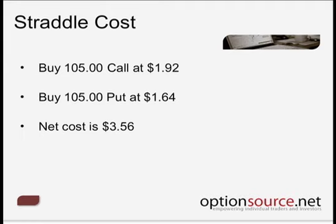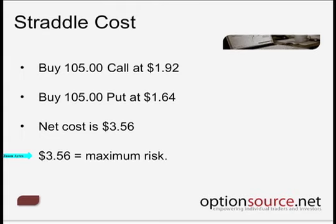This $3.56 represents the maximum risk of that particular strategy. John just had a question — it's a little more advanced for some folks — but why would you want to sacrifice the gamma by splitting your expirations? That would be referencing the impact that a stock movement is going to have on the delta and the impact on each of the option contracts, respectively, based on a stock move.